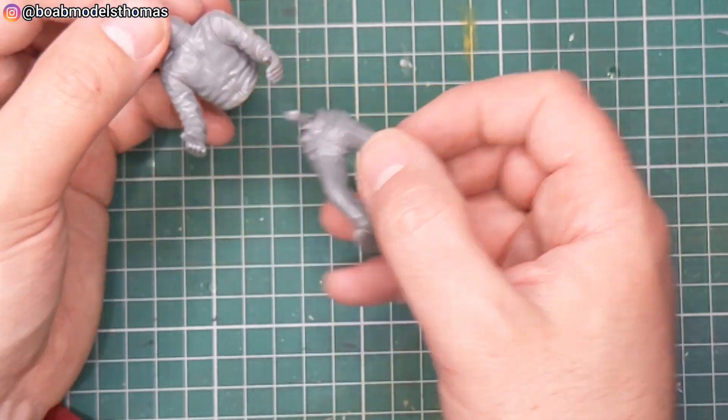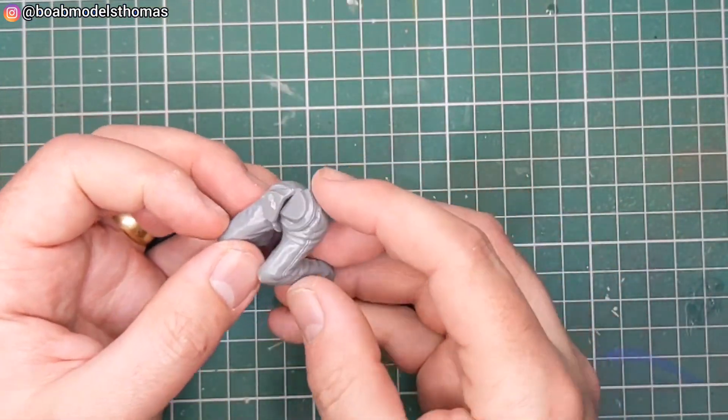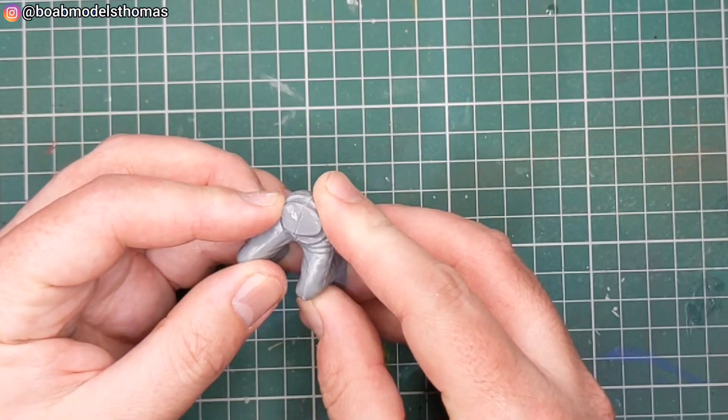And there you are you can see that that goes together like so. Then finally we've got figure C which is in a kind of crouched position.